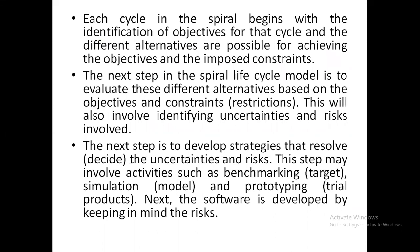Based on objectives and constraints, we pick one alternative. For example, if we design a program to find the least number in an array, we can use a single loop or a dual loop. If the constraint is to use a single loop with least time, we go for the single loop. If time is not a concern, we go for the dual loop. Similarly, to develop software, we have more than one technique or alternative available.